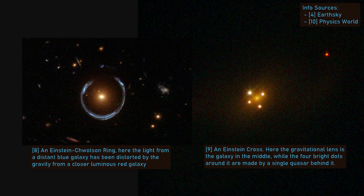Einstein-Khvolson rings, or just Einstein rings or Khvolson rings, are formed when the three bodies — observer, gravitational lens and source — line up perfectly, producing a halo of light from the source surrounding the lens.